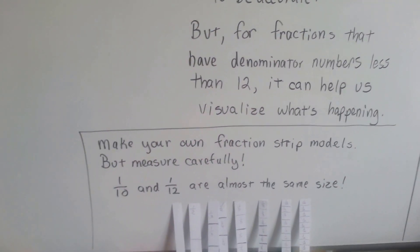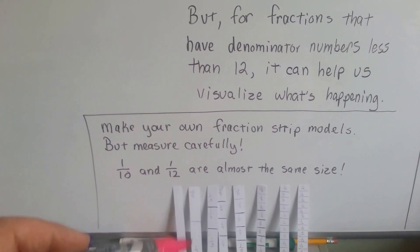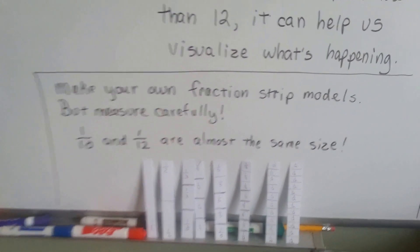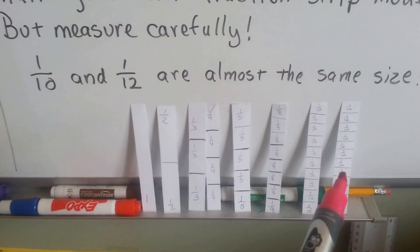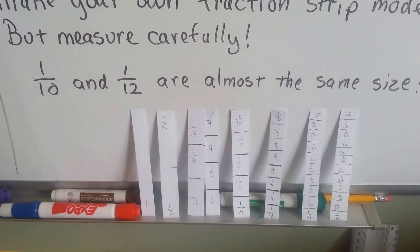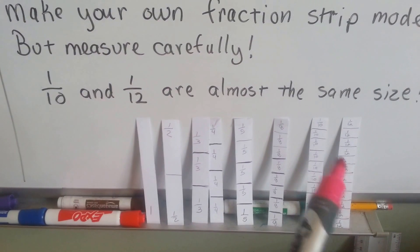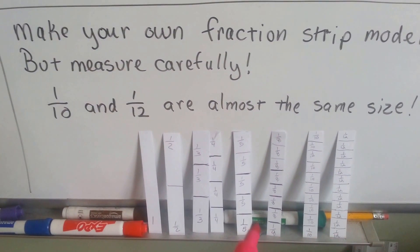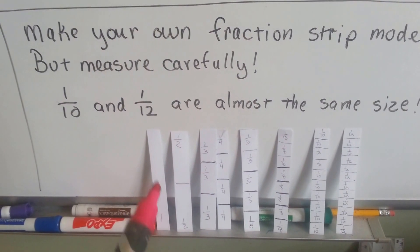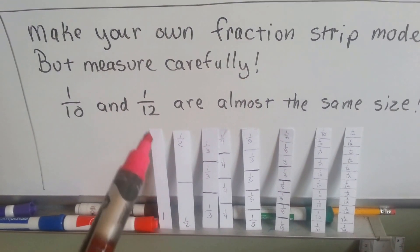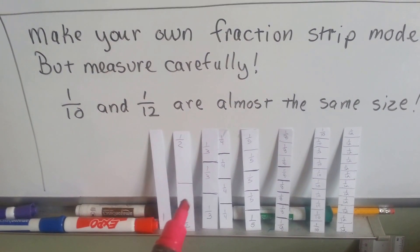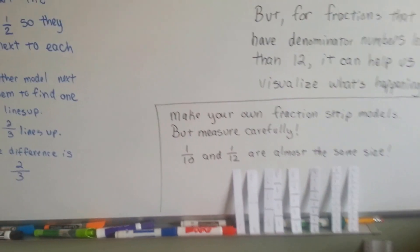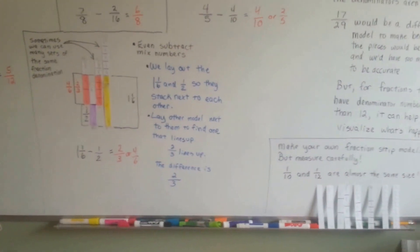So, in order to do this unit, you're going to need to make yourself some paper or card fraction strip models and measure carefully because things like tenths and twelfths are almost the same size. You want to make sure that you're really dividing these equally into ten parts and equally into twelve parts and make a few that are one whole so that you can use them to line up. Maybe you can even make a few of each, okay? So, you're going to need these to do this unit in the book and I hope this was helpful.